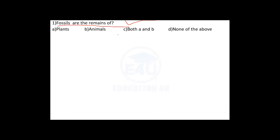Fossil is the correct answer. The options are: Plants, Animals, Both A and B, None of them. The correct answer is number C — Both A and B.